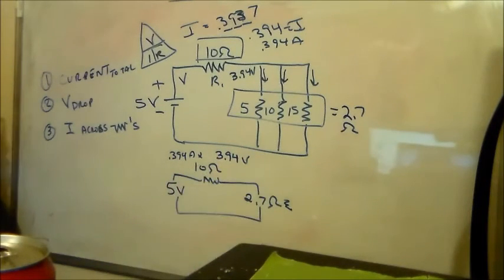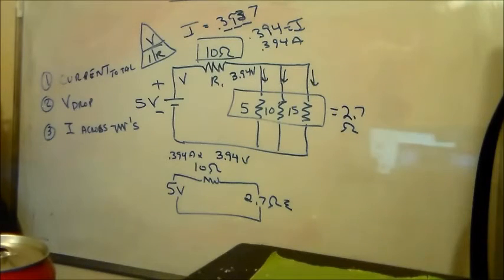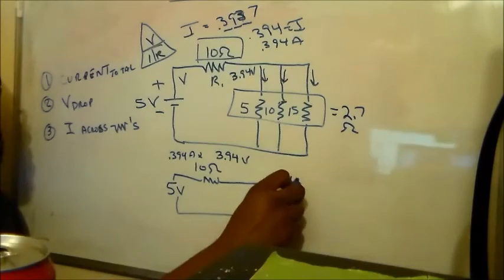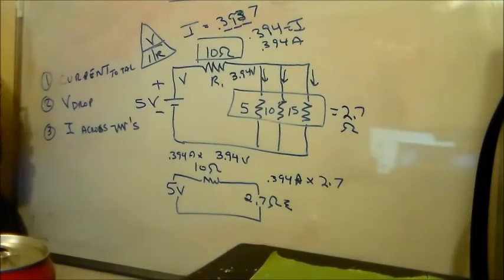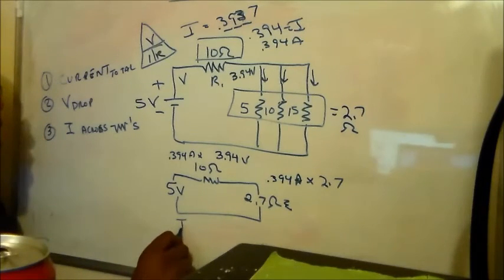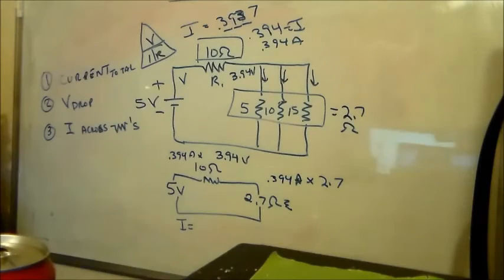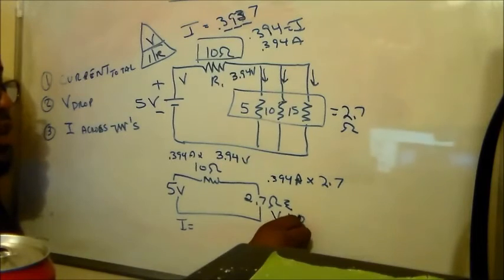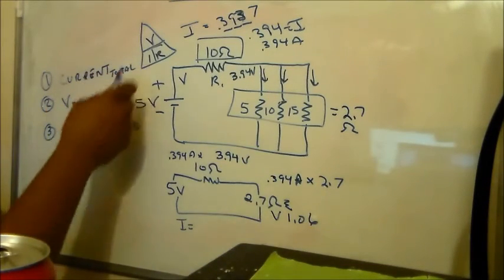So, we treat it like it's a single component. We got to find what the current is. 0.394 amps times 2.7 ohms. And, then we get the voltage flowing through all three of these resistors. Current is equal to total current going through the branches. 0.394 times 2.7 ohms. What we get is a voltage of 1.06. That's our total voltage, 1.06. So, now, all we need to do is go back to our ohms law.